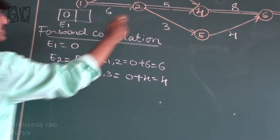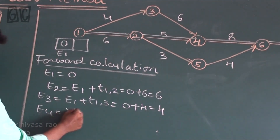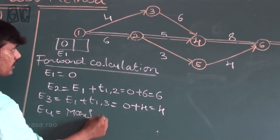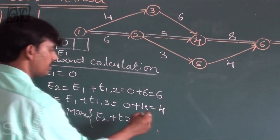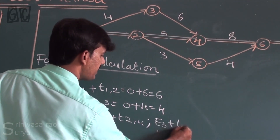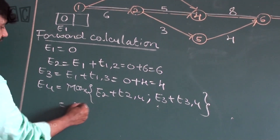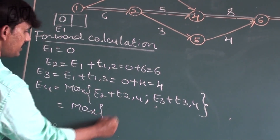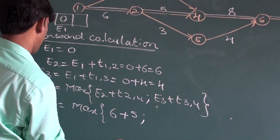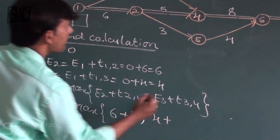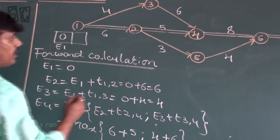Now E4: E4 is coming from nodes 3 and 2, so we take the maximum of E2 plus time taken from 2 to 4, and E3 plus time taken from 3 to 4, which equals maximum of (6+5) and (4+6), giving E4 equal to 11.